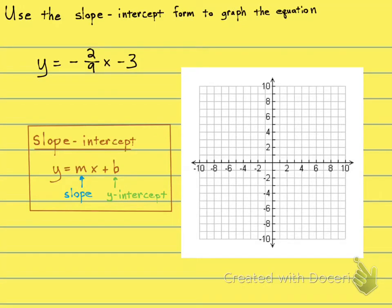They want us to graph this equation right here: y equals negative 2 over 9x minus 3. It's already in slope-intercept form.